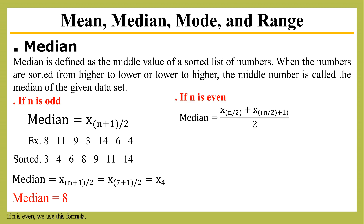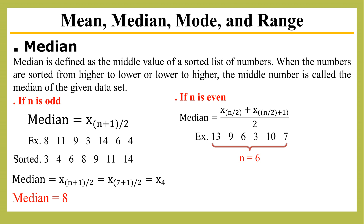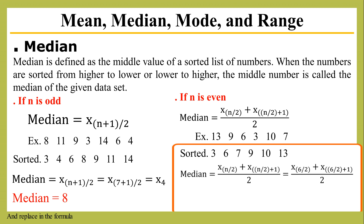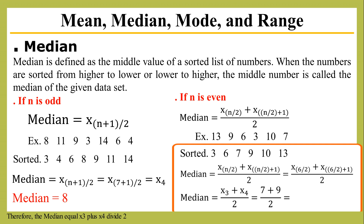If n is even, we use this formula. This is an example with n equals 6. I sort from lower to higher and apply the formula. Therefore, the median equals h3 plus h4 divided by 2, equals 7 plus 9 divided by 2, equals 8.